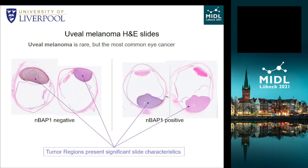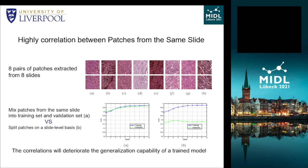Uveal melanoma is rare but the most common eye cancer. We present four cases of uveal melanoma slides with H&E staining, with MEBT1-negative and MEBT1-positive. We can see from these four cases that the tumor region possesses significant slide characteristics. In other words, patches from the same slide present high similarity in terms of appearance, pigment, and morphology.